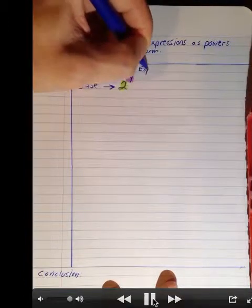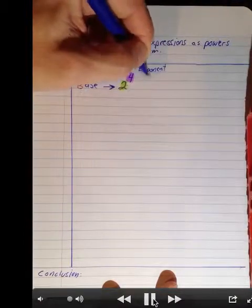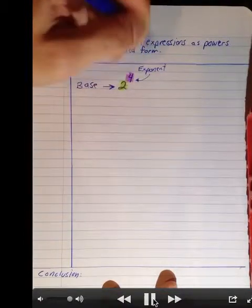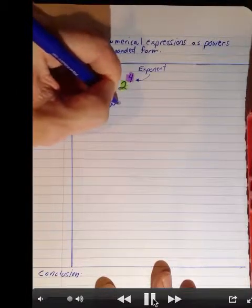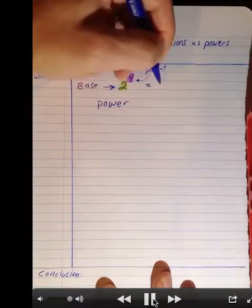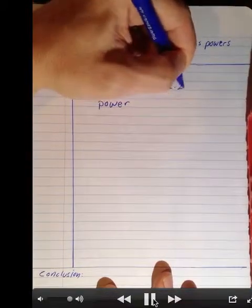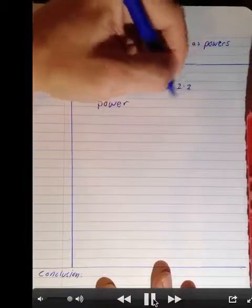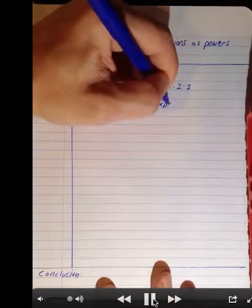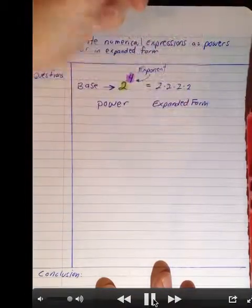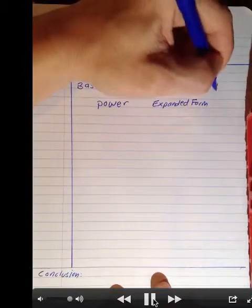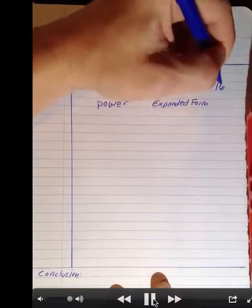We can also write it in expanded form. A power has a base and an exponent. The base is the number that's multiplied together, and the exponent says how many times to multiply it together. So we repeat the multiplication: 2 times 2 times 2 times 2 — we have 4 copies of the base. We multiply those together, so the value is 16. The expanded form is 2 times 2 times 2 times 2, and the power form is 2 to the 4th power.